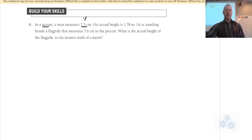So that looks like a model, right? That's the representation, that's not the man's actual height. His actual height is 1.78 meters. He is standing beside a flagpole that measures 7.6 centimeters in the picture. So again, here's another measurement for the model. What's the actual height of the flagpole to the nearest tenth of a meter?